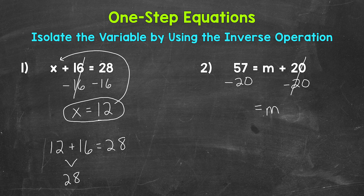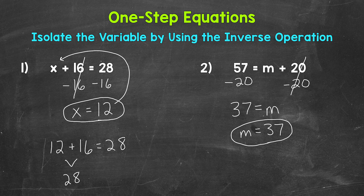So m equals, and then on the left side of the equation, 57 minus 20 equals 37. So m equals 37, and we can rewrite this with the variable coming first: m equals 37. Let's check that solution by plugging 37 in for m in the original equation. 57 equals 37 plus 20 — 37 plus 20 does equal 57, so we have the correct solution: m equals 37.